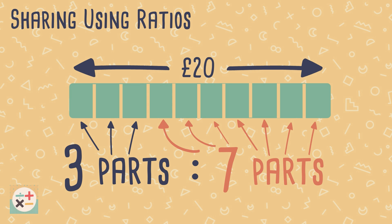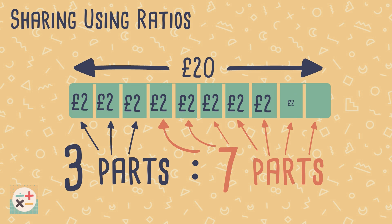If we divide £20 by 10, we get £2. So each part is worth £2. Now we can calculate how to distribute each £2 into the ratio.